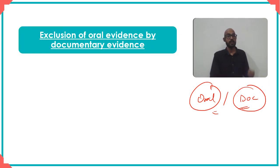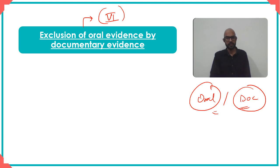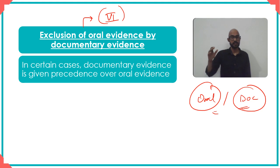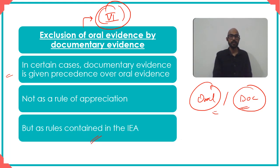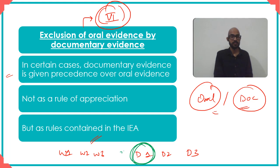In the example where you have both oral and documentary evidence, there are rules about making the choice between them — found in the exclusion of oral evidence by documentary evidence in Chapter 6 of the Indian Evidence Act. Reliability is one means of appreciation, but documentary evidence is also given precedence over oral evidence in Chapter 6 as a rule contained in the Act itself. So when you have multiple witnesses and multiple documents, you may have to pick documentary evidence over oral evidence.